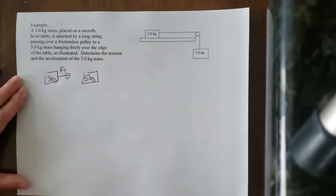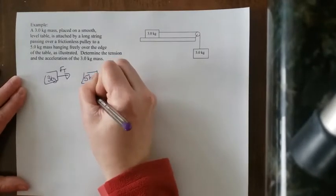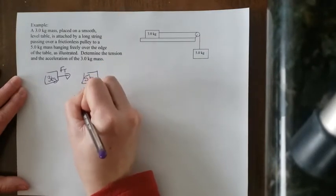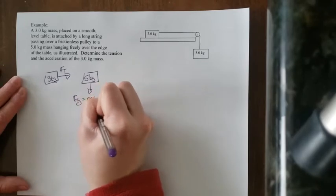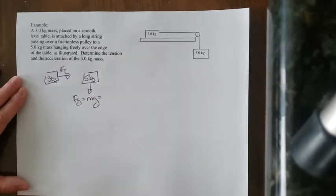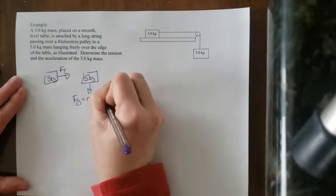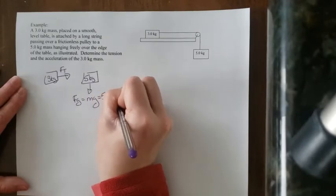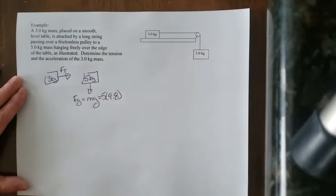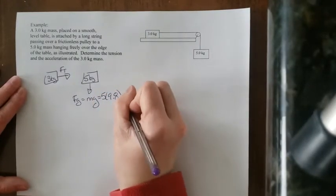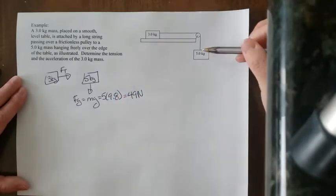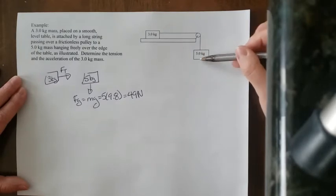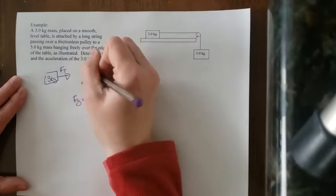So pulling it down is the force of gravity. We have Fg equals Mg, which is equal to five times 9.8. And when we plug that into our calculator, we get 49 newtons. The other force affecting this one is the string. The string is preventing it from free falling down.